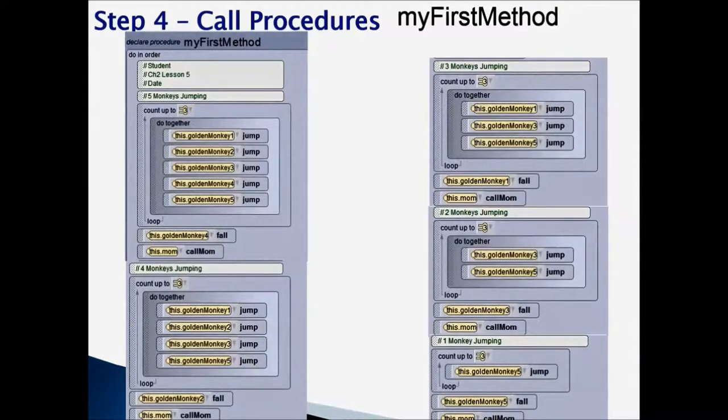Step 4, call procedures in my first method. Here is a sample when you finish program my first method would look like. I am giving a comment in here, 5 monkeys are jumping. Since 5 monkeys are jumping and they are jumping 3 times, I am calling jump, jump, jump, and I am putting that under count. Each monkey is jumping 3 times.